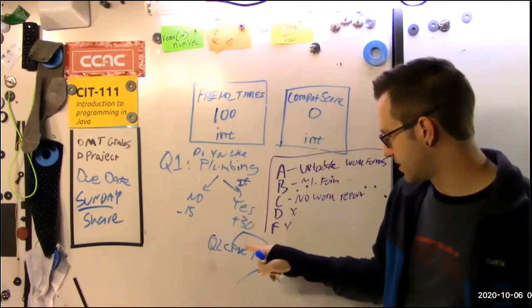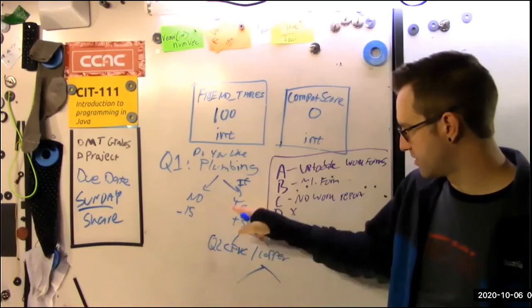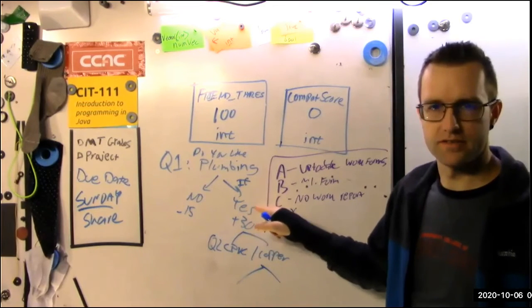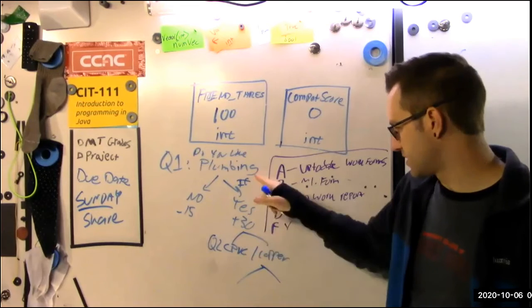If they do, you get 30 points. And then I will only ask question two under the condition that they answered yes to the first one. So you can start having branching logic.